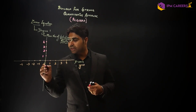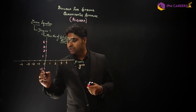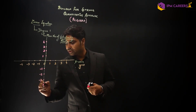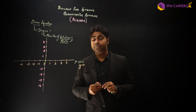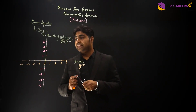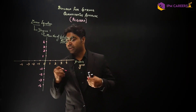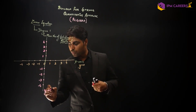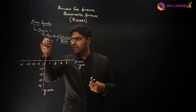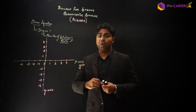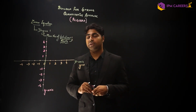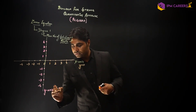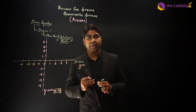When we go down, values decrease: minus 1, minus 2, minus 3, minus 4 and so on. This particular line is called the y-axis. And what is the y-axis equation? The y-axis equation is x is equal to 0.